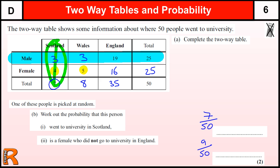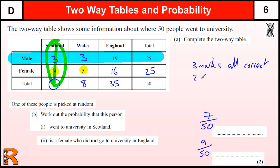One mark for each of those. There were three marks to complete the table, two marks for parts four or five, and one mark for parts two or three.